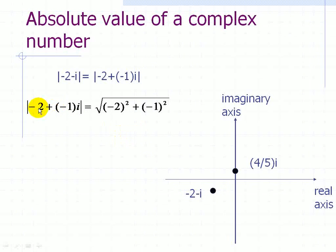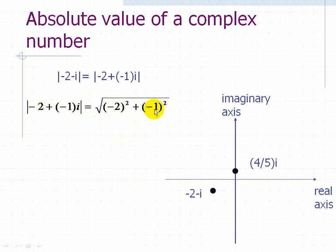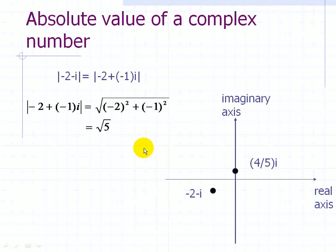The real component is -2, so we square it; the imaginary component is -1, so we square that also. We sum the real part squared plus the imaginary part squared, and then take the square root — that is the distance, or absolute value, from this point to the origin. This works out to be the square root of 5, since (-2)² = 4 and (-1)² = 1, and 4 + 1 = 5.